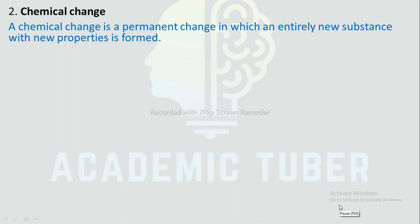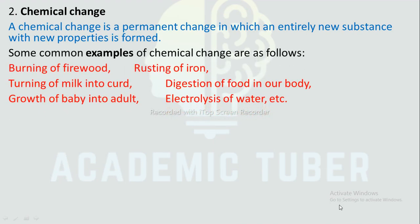Chemical change: A chemical change is a permanent change in which an entirely new substance with new properties is formed. Some examples of chemical change are burning of iron, roasting of iron, turning of milk into curd, digestion of food in our body, growth of baby into adult, and electrolysis of water.